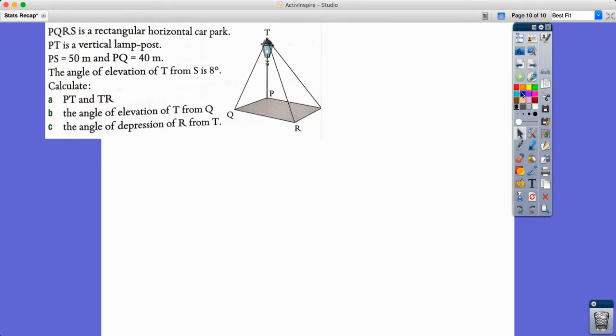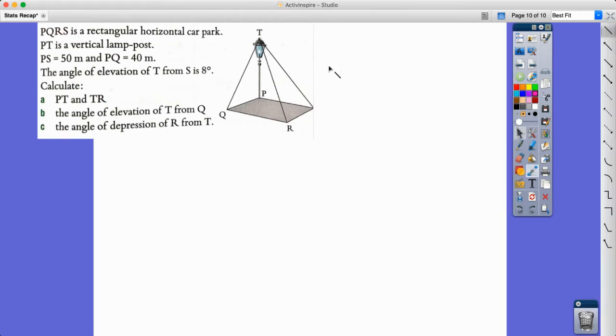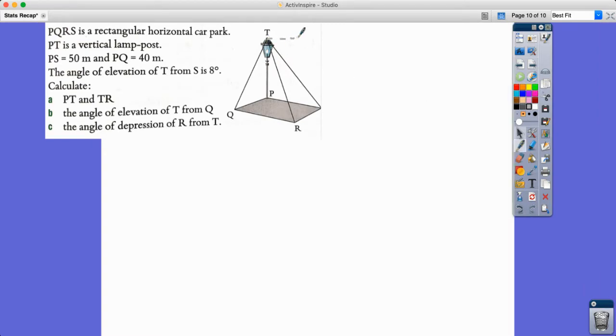So what I need to think about there is angle of depression is from T measured from the horizontal. If I just draw in a rough horizontal line there and of R from T, so it's going to be—if we imagine, there's that right angle triangle again. So if I can work out this angle up here, then can you see that that would make a right angle with the angle that I'm actually trying to find?